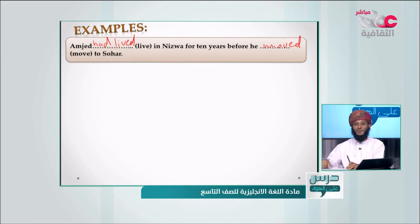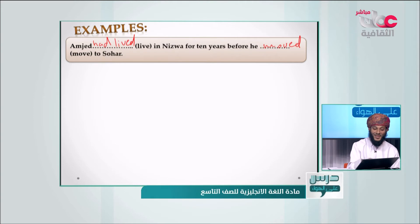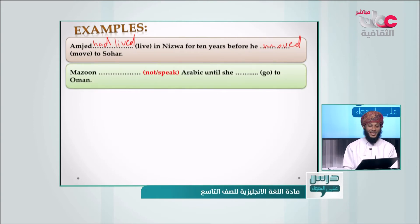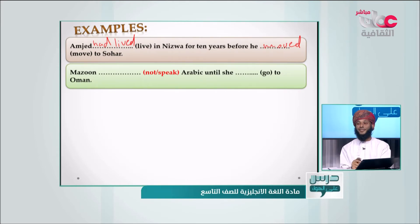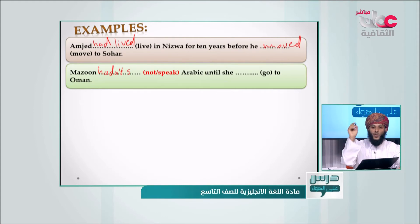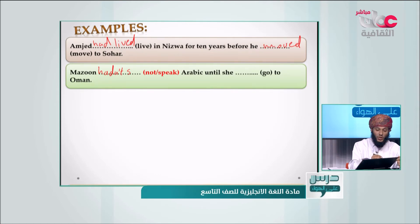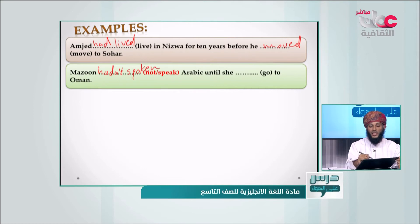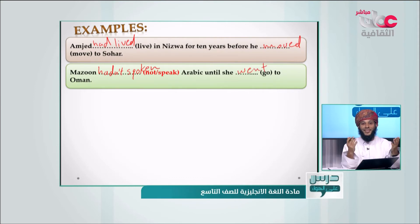Second practice: 'Muzna ___ Arabic until she ___ to Oman.' Answer: 'Muzna hadn't spoken Arabic until she went to Oman.' We use 'spoken' — not 'speaked' — because 'speak' is an irregular verb, so we don't just add a 'd' to it.